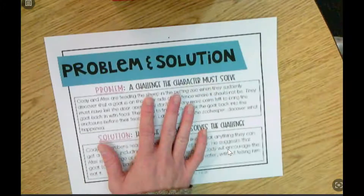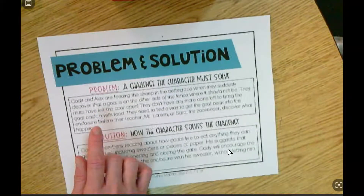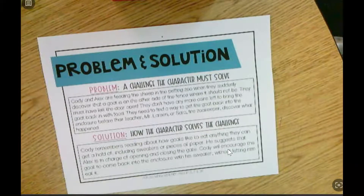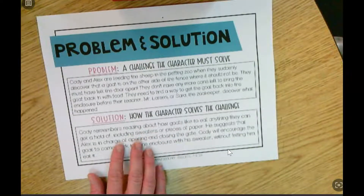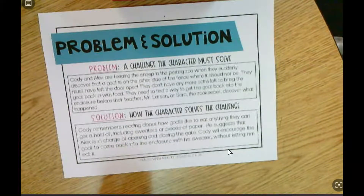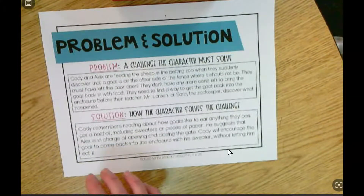Then we planned out our problem and solution. The problem is that Cody and Alex are at the petting zoo feeding the sheep, and they discover a goat on the other side of the fence where it should not be. They don't have any coins left to lure the goat back in with food because they used them to buy cups of food. So they've got to figure out another way to get that goat back inside the enclosure before their teacher and the zookeeper find out. The solution is that Cody remembered reading that goats like to eat anything — even sweaters and paper. His plan is to take his sweater off and lure the goat back in, while Alex is in charge of opening and closing the gate, without letting the goat eat the sweater.